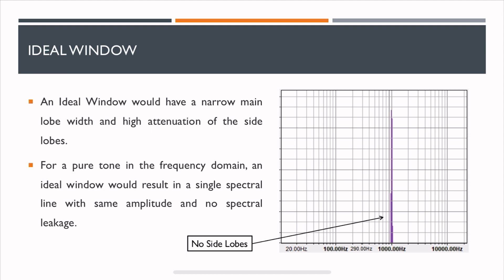When you have a main lobe, the main lobe should not compromise the amplitude of the signal, should capture the exact amplitude of the signal. When you don't have side lobes, you're minimizing or eliminating spectral leakage.